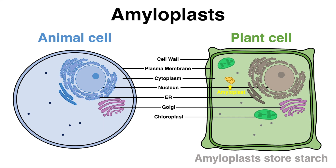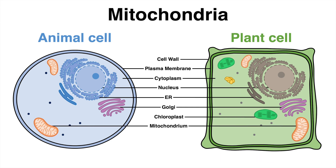Some plant cells also possess a different type of plastid. The amyloplast is responsible for the storage of starch, an important polysaccharide for plant cells. In contrast to plastids, mitochondria are found in both cell types. Mitochondria, as the powerhouse of the cell, provide the energy needed to power these cells' biochemical reactions.